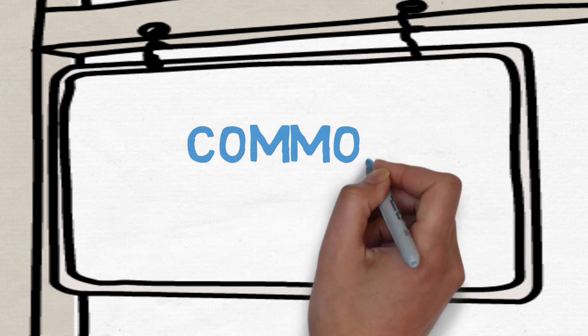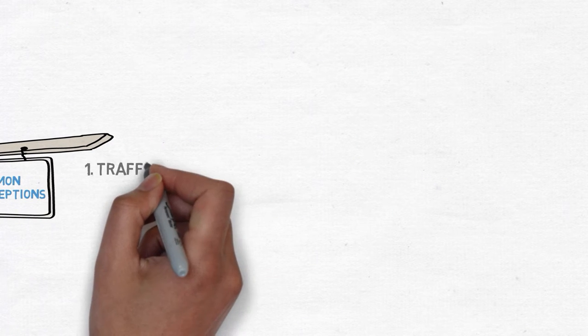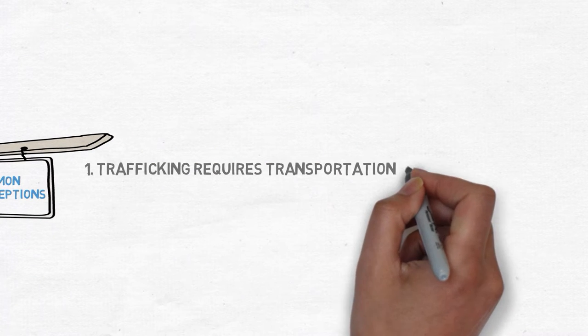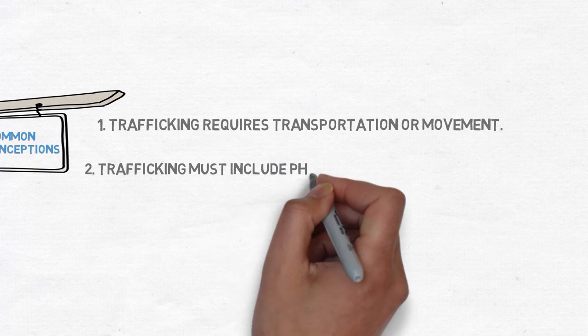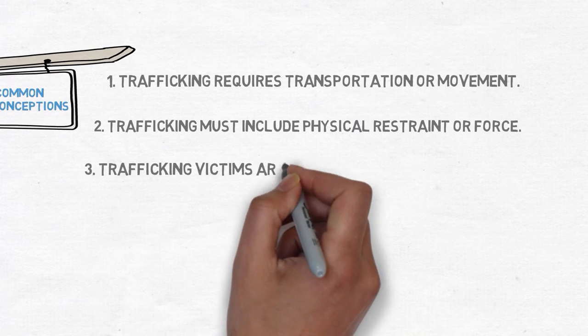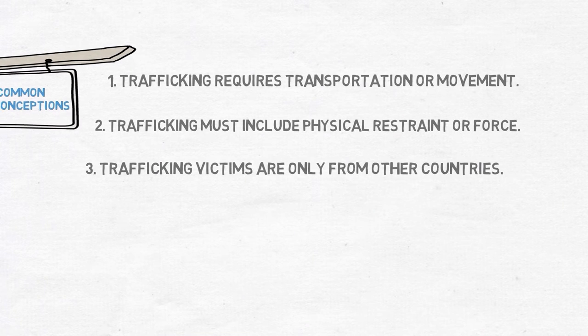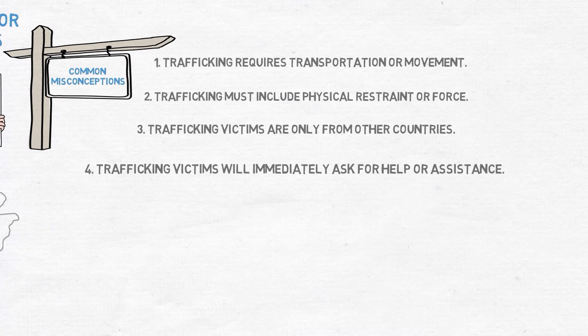Common misconceptions about human trafficking include that trafficking requires transportation or movement, that trafficking must include physical restraint or force, that trafficking victims are only from other countries, or that trafficking victims will immediately ask for help or assistance.